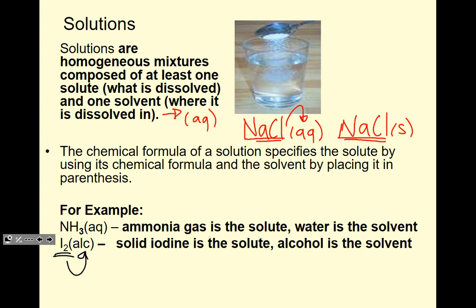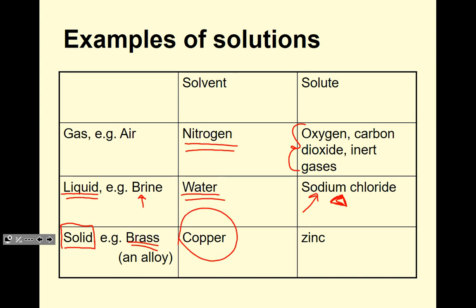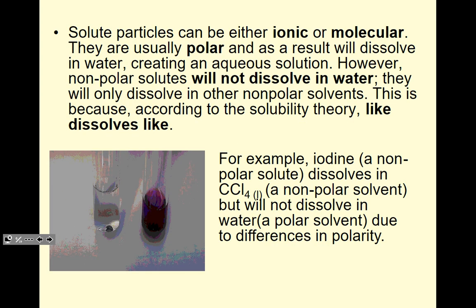Here are some examples of solutions. A gas solution would be air — nitrogen is the highest amount and oxygen is one of the solutes. An example of a liquid solution is brine, used in culinary arts: water is the solvent and sodium chloride is the solute — you put meat in it and it tenderizes and makes it juicy. A solid solution example is brass, which just looks like one thing but is a combination of copper (the highest percentage) and zinc (the smaller percentage).